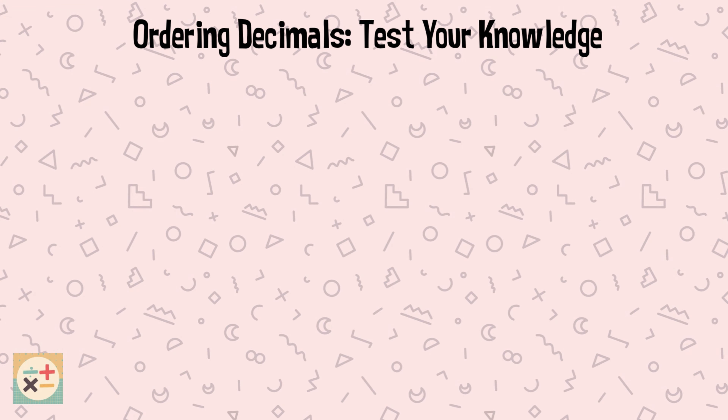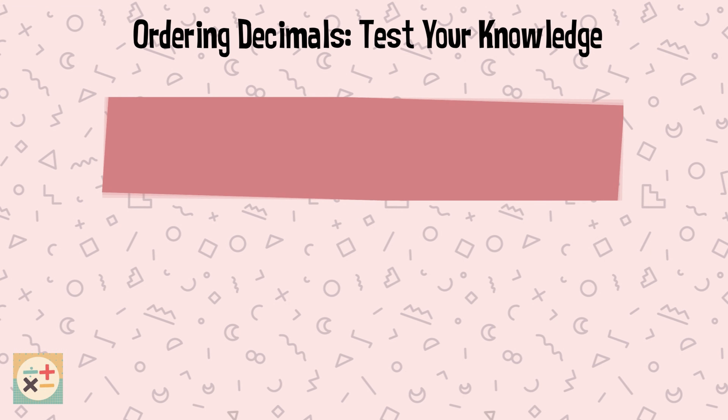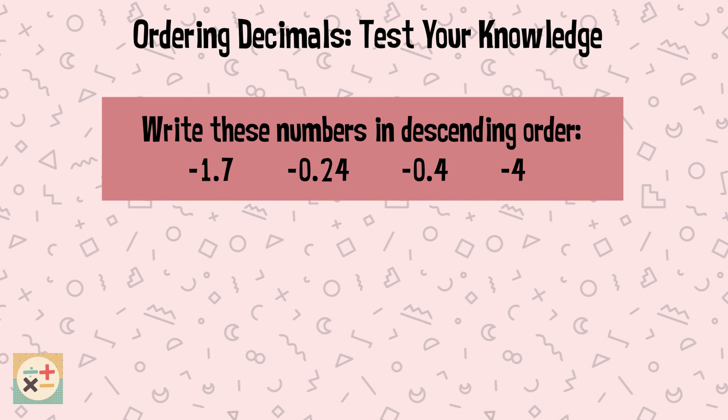Question 9. Write these numbers in descending order: minus 1.7, minus 0.24, minus 0.4, minus 4.